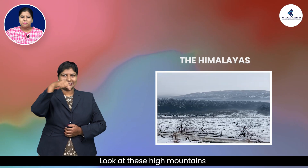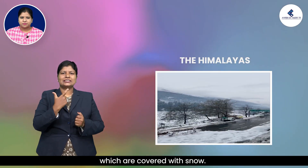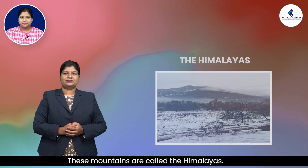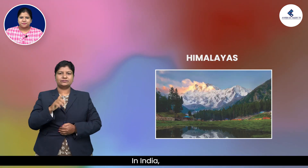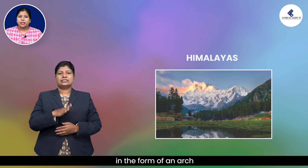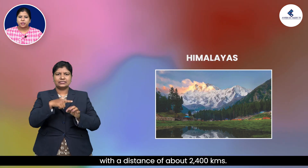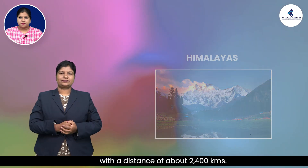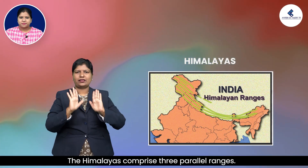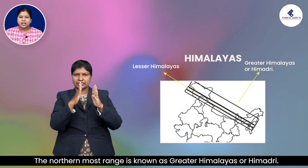Look at these high mountains covered with snow — these are called the Himalayas. In India, the Himalayan ranges run in a west-east direction in the form of an arc, with a distance of about 2,400 kilometers. The Himalayas comprise three parallel ranges.